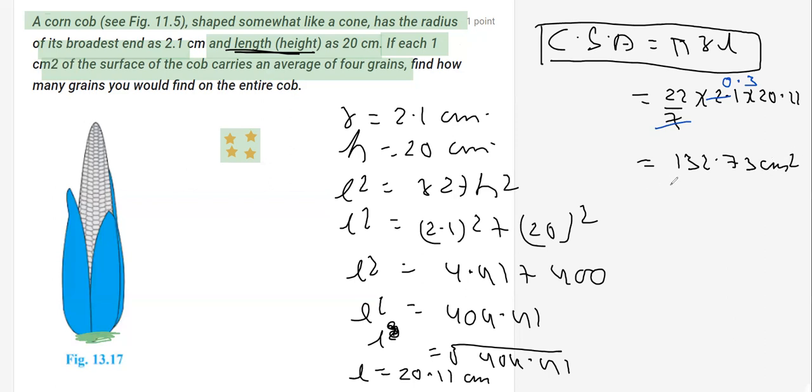Now what next? Once we get the surface area where these corns are present, what we need to do is to find the number of corn. As we already discussed, the number of corns, as per the question mentioned, in 1 centimeter square, there are 4 corn.